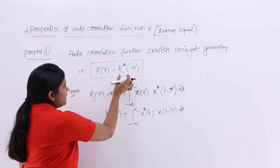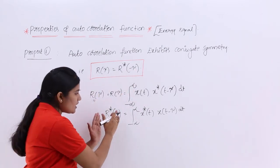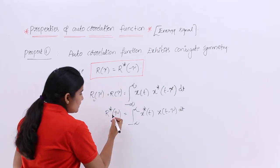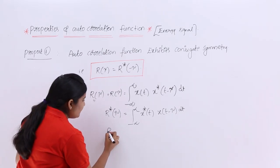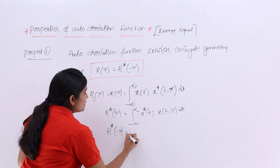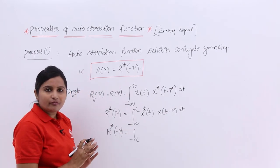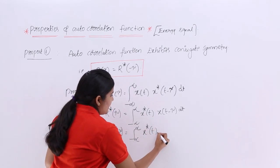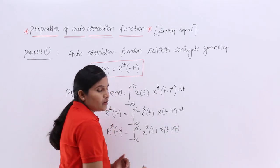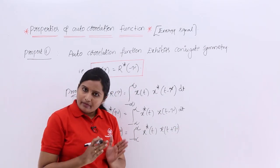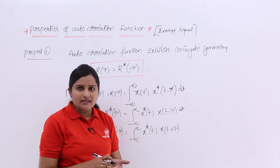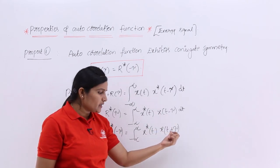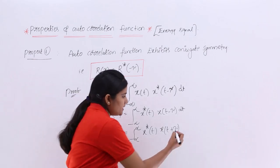The next step is we need to calculate r*(−τ); we do not want r*(τ), we want r*(−τ). Here we have plus τ, so I am replacing plus τ with minus τ. That gives us the integral from minus infinity to infinity of x*(t) · x(t + τ) dt — because minus of minus τ becomes plus τ.